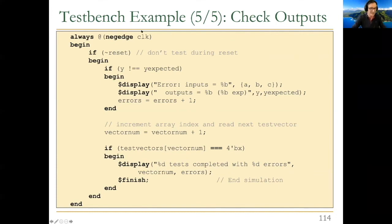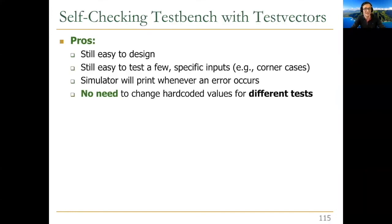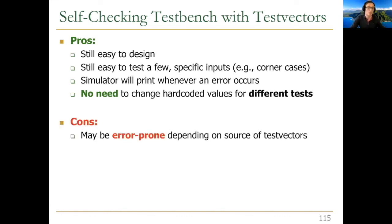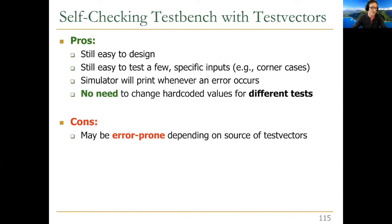This approach is clearly much more scalable with test vectors — it's easy to design, easy to test many inputs, and the simulator prints whenever an error occurs. No need to change hard-coded values for different tests; you just modify the test vector file. It's more scalable, but can be error-prone depending on how you generate the test vectors — if generated by hand, it's very error-prone — and it may still be limited by memory when you have many combinational paths to test.